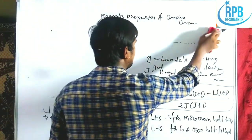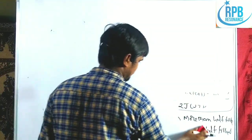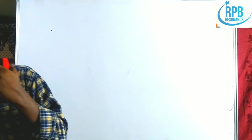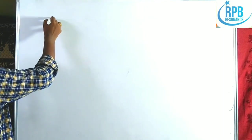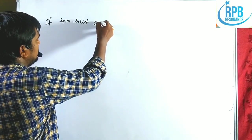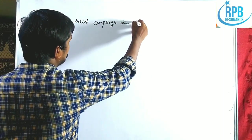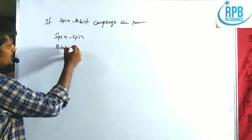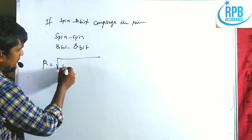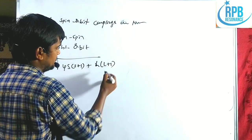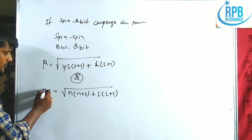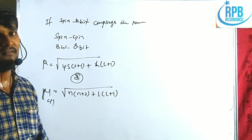The second formula applies when spin-orbit coupling is nullified — only spin-spin and orbit-orbit interactions are significant. In this case, μeff = √[4S(S+1) + L(L+1)], which can also be written as √[N(N+2) + L(L+1)], where N is the number of unpaired electrons.